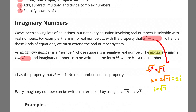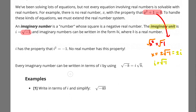That i stands for the imaginary unit, and it's equal to the square root of negative 1. i has the property where i² = -1. No real number has this property. If you square both sides of i = √(-1), you get i² = -1.